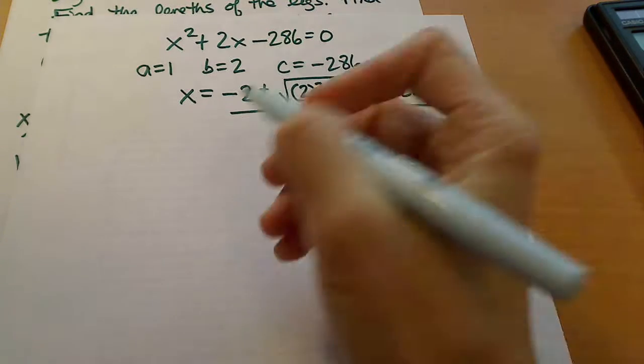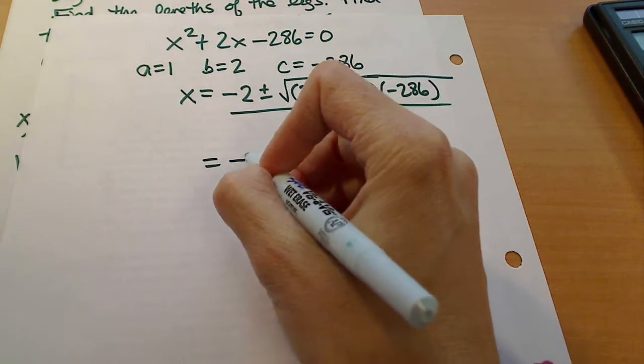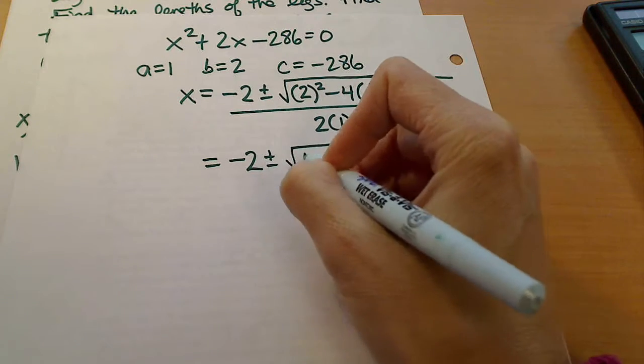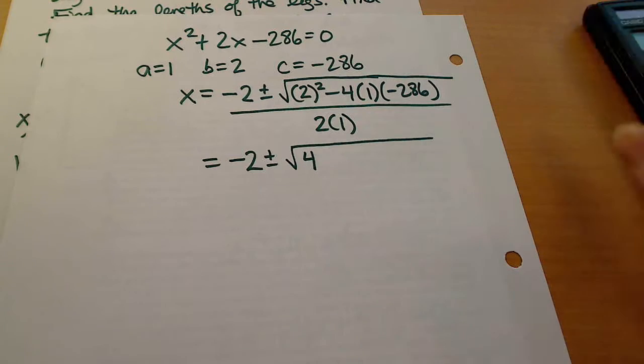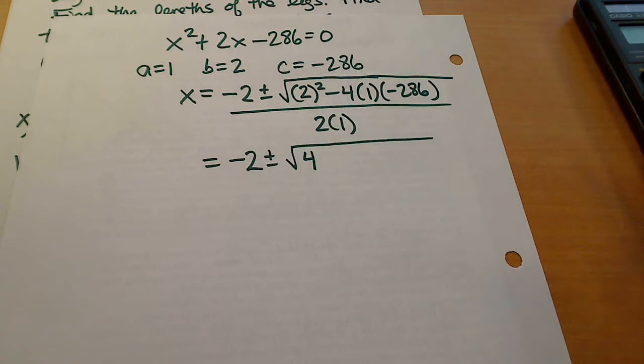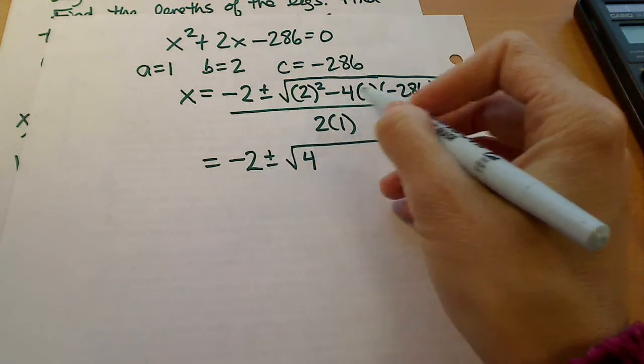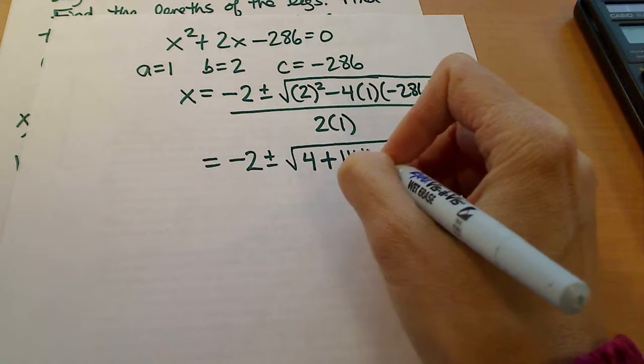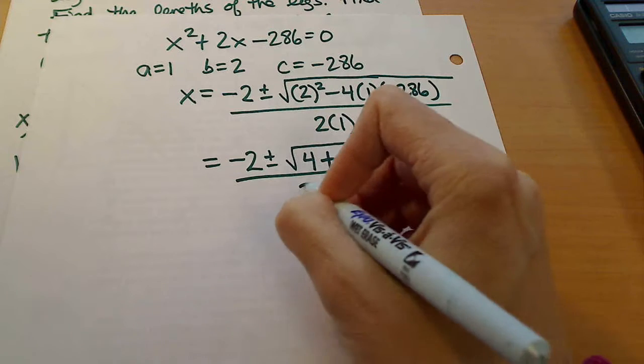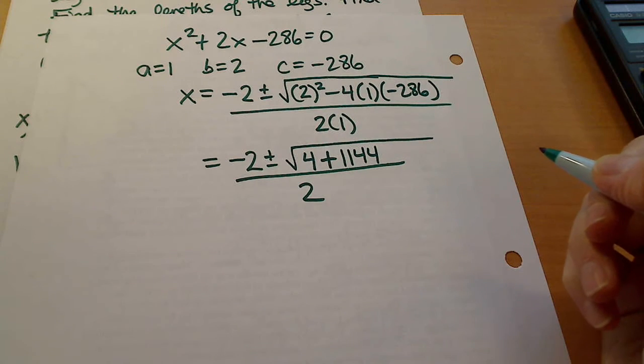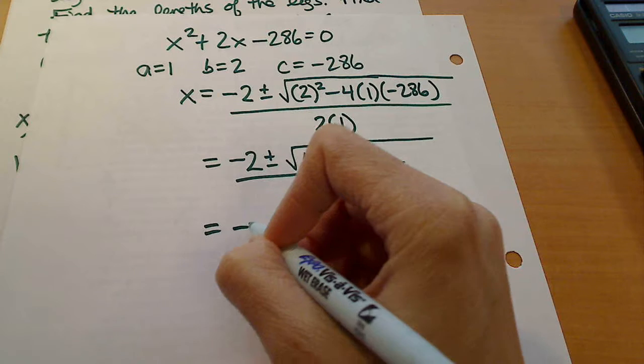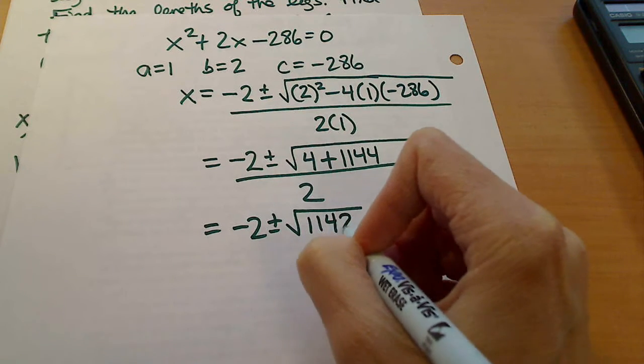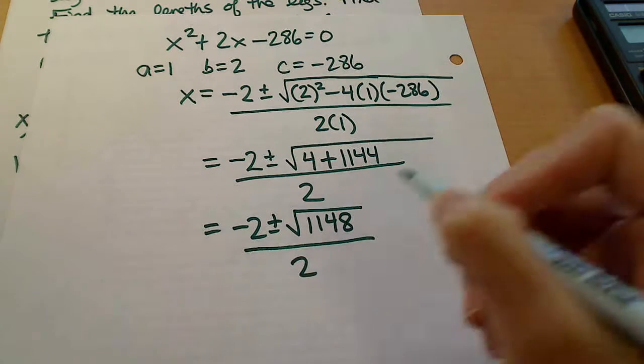If we go ahead and simplify this, this becomes negative 2 plus or minus the square root of 2 squared is 4, and then we've got 4 times 286, and it's going to end up being positive because we have a negative times a negative here, so that'll be a positive 1144, and that's all over 2. So this is then negative 2 plus or minus the square root of 1148 all over 2.